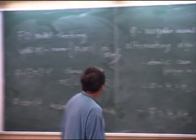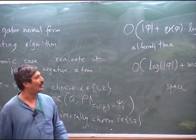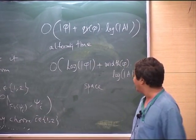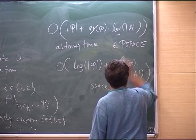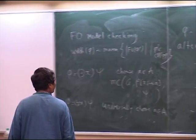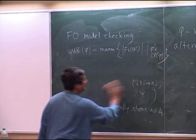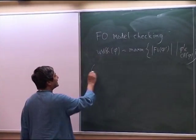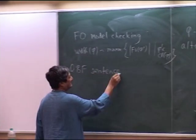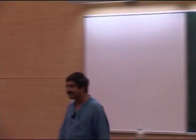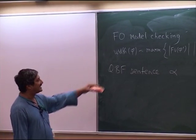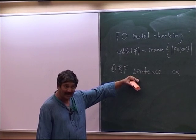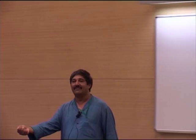This very simple algorithm runs in alternating linear time, and since alternating polynomial time equals PSPACE, this algorithm is in PSPACE. In fact, it is easy to also show the problem is PSPACE-complete, by reduction from QBF — the standard tool for PSPACE-hardness. If you have a QBF sentence α, you reduce it to the model-checking problem for first-order logic: you pick a structure and construct a first-order formula such that the sentence evaluates to 1 if and only if the formula is true in that structure.